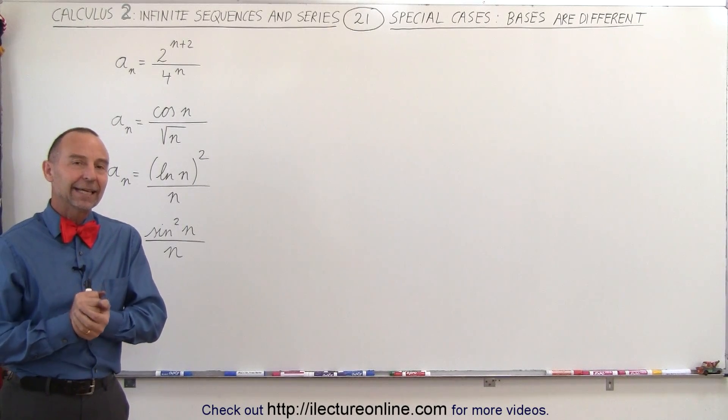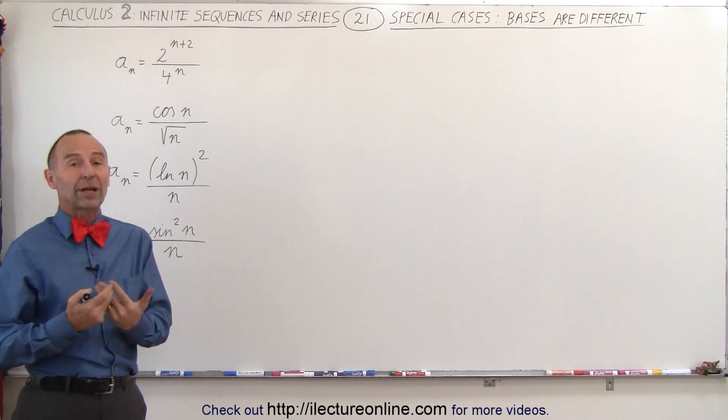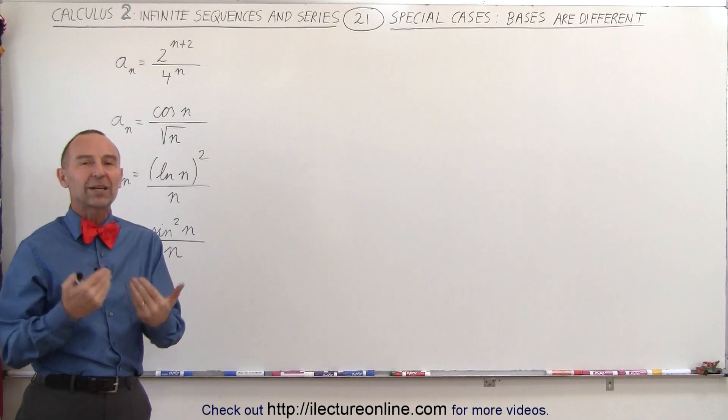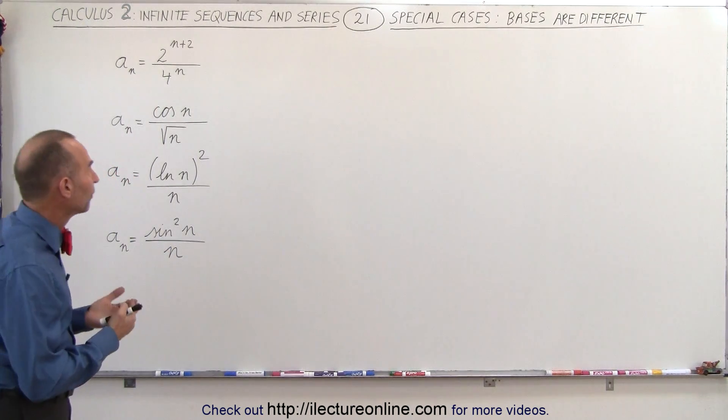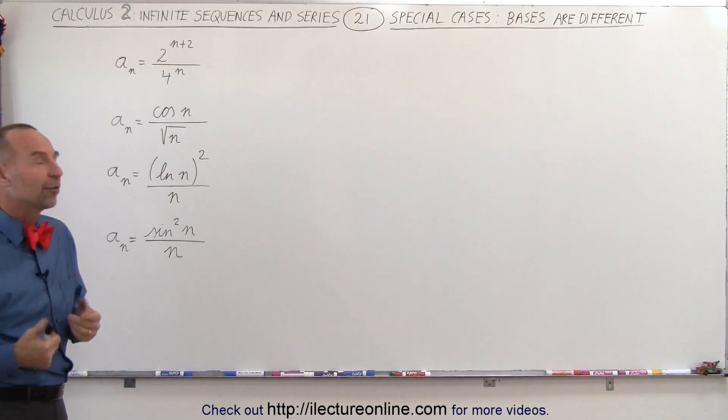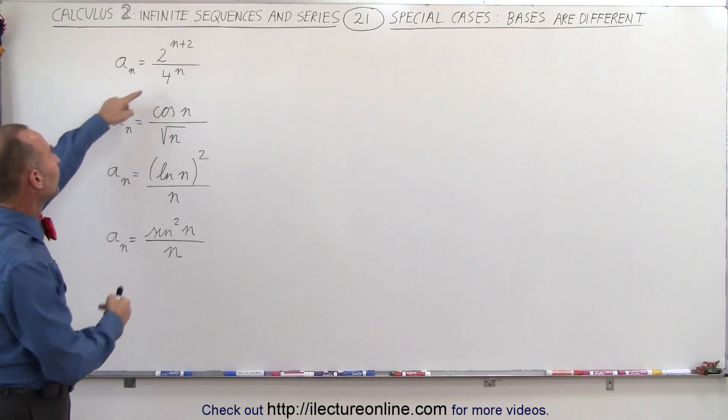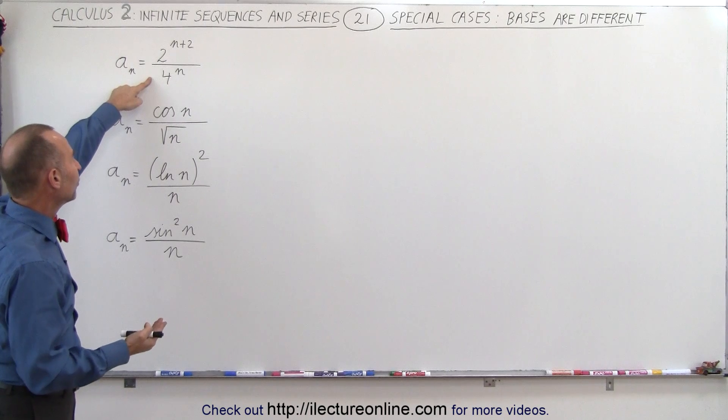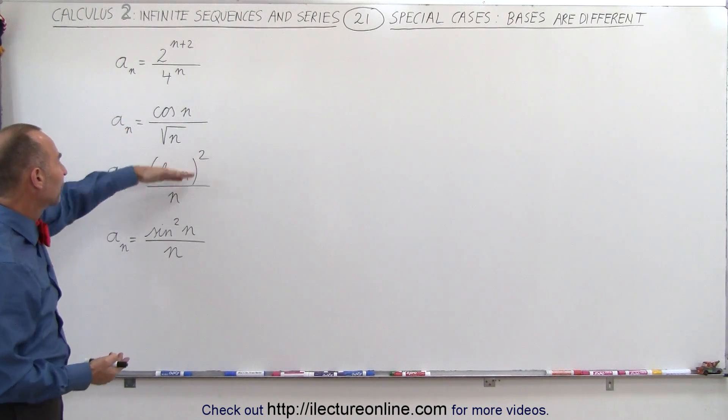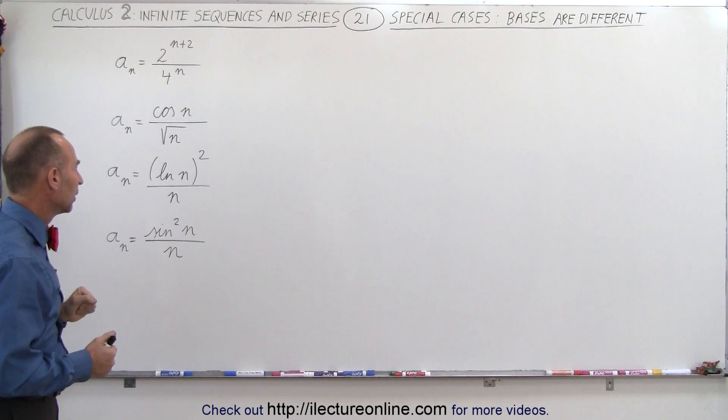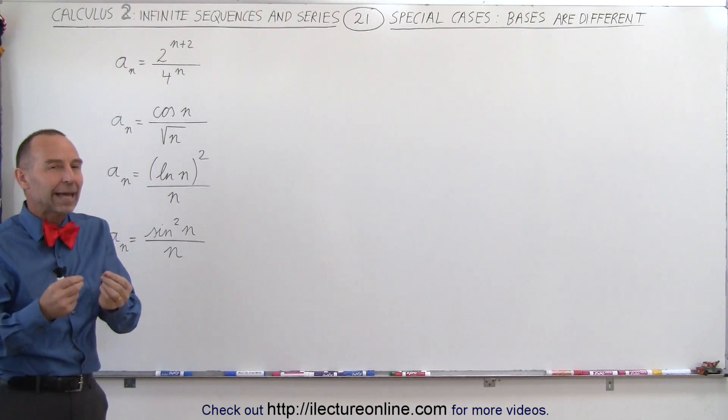Welcome to our lecture online. In this set of examples, we're trying to determine whether or not the sequences will converge as n becomes very large. We have some special cases here where the bases of the exponents are different, or we have different functions, or we have different kinds of exponents. So how do we deal with that? How do we look at it?